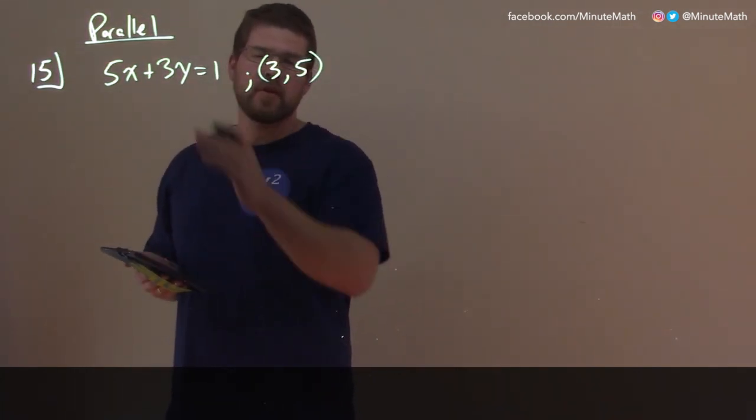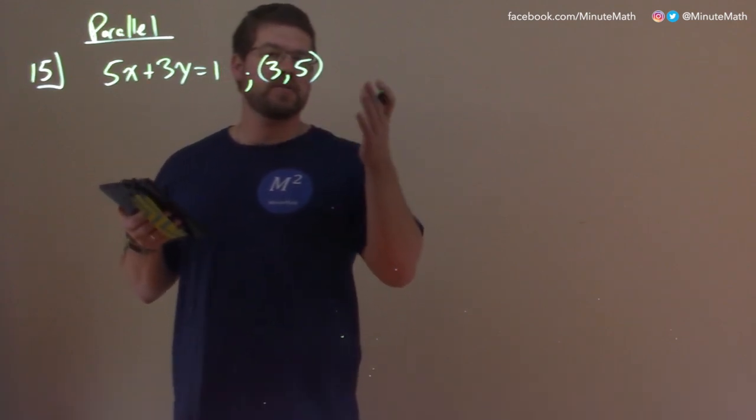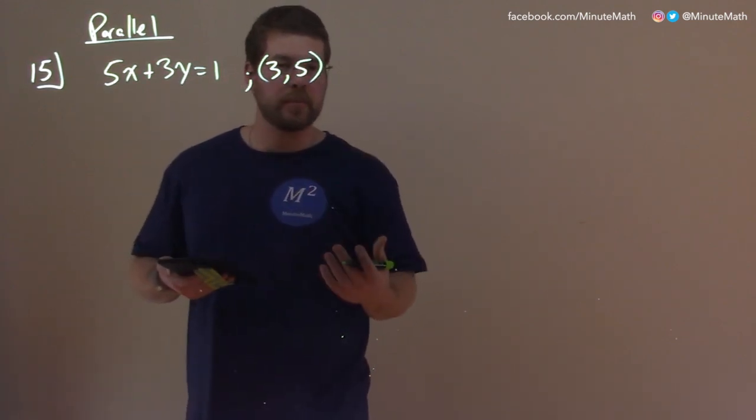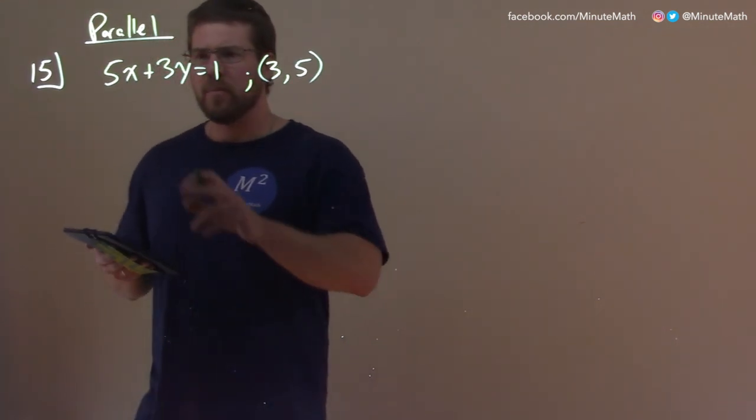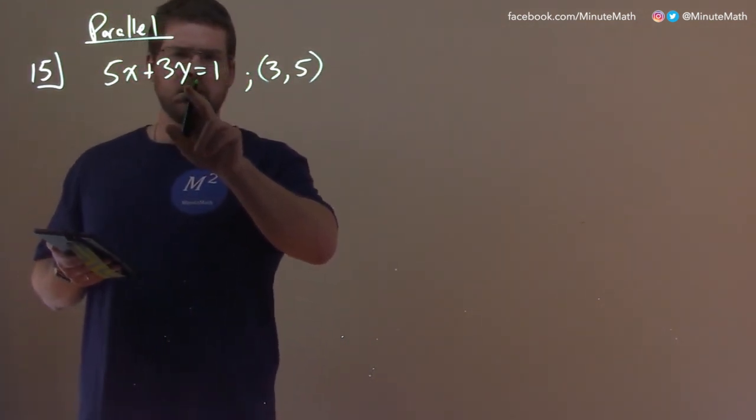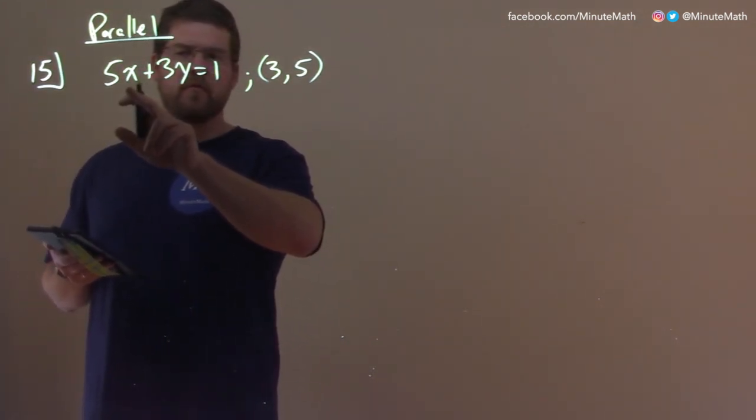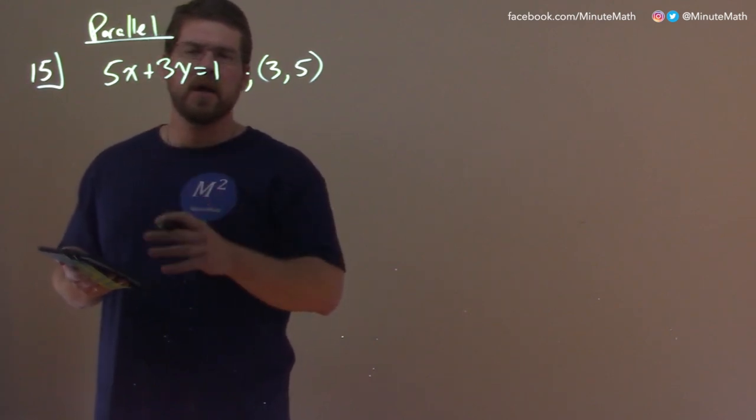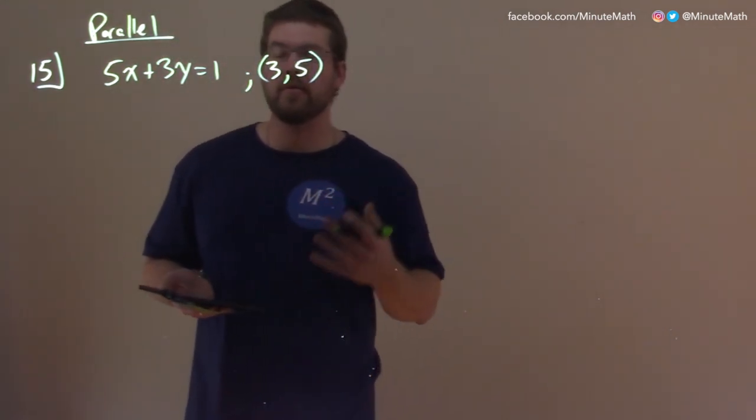Well, first thing I want to do when I'm thinking parallel or finding an equation of a line, we have a point, we need a slope. Well, we know they're going to have the same slope here. So we have 5x plus 3y equals 1. Let's get this in slope-intercept form so it's easy to find the slope.